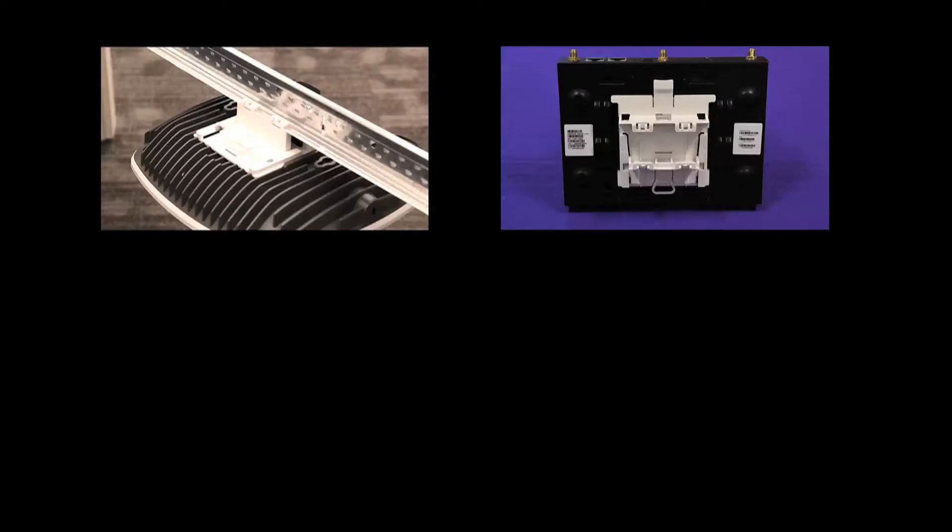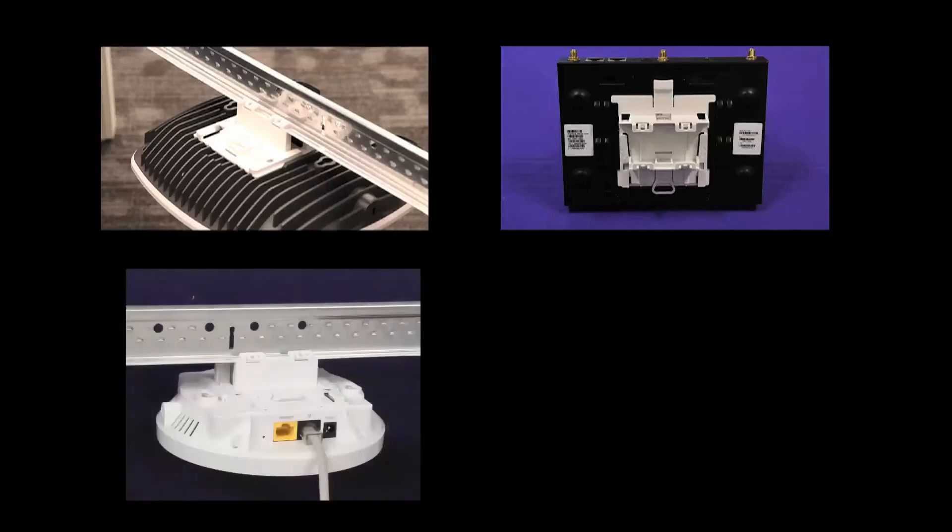The multi t-bar bracket will accommodate most 9-16 inch wide, 15-16 inch wide, and 1.5 inch wide t-bars. It can also be used with all flat ceiling tiles or most ceiling tiles that protrude.